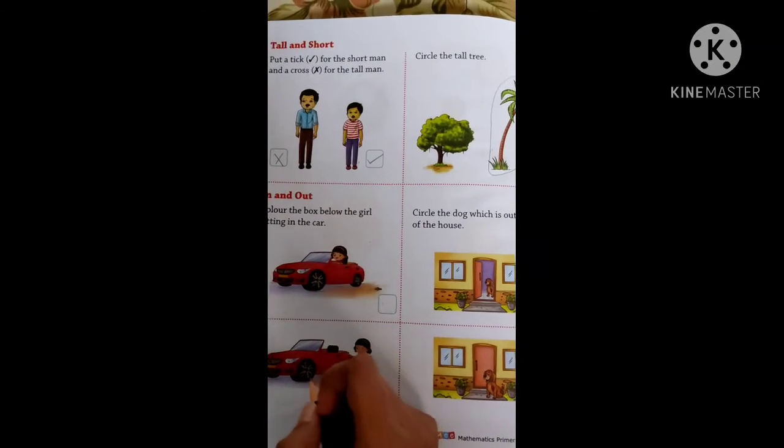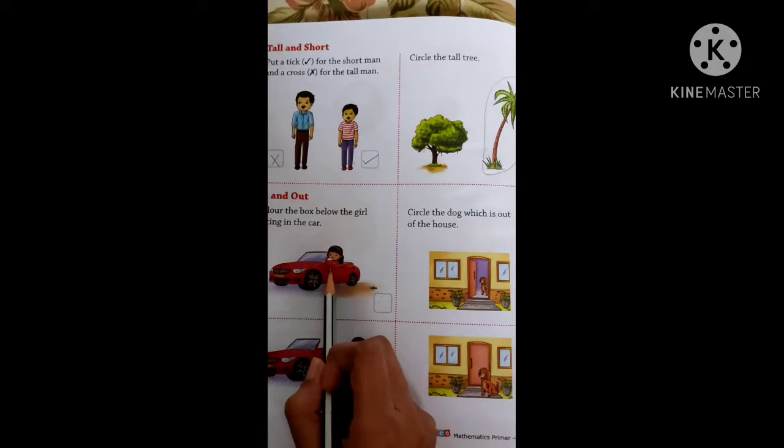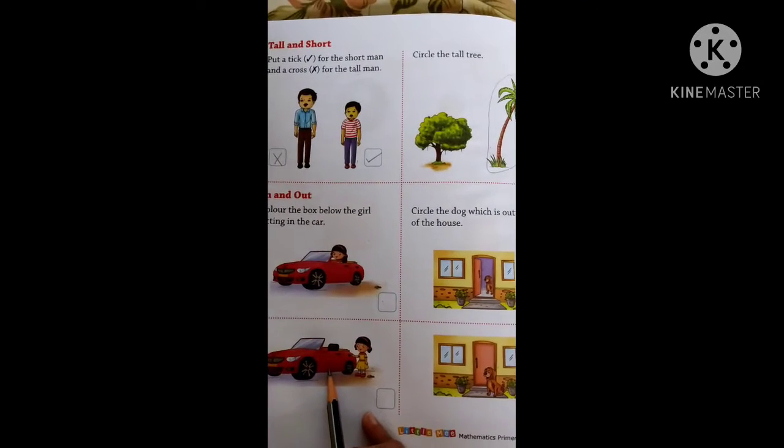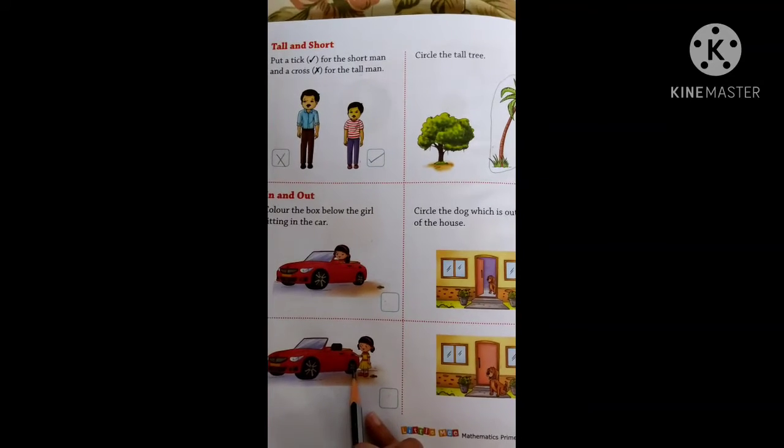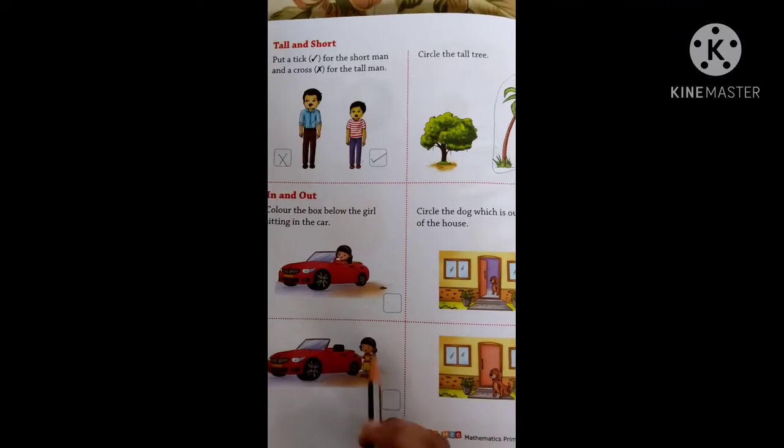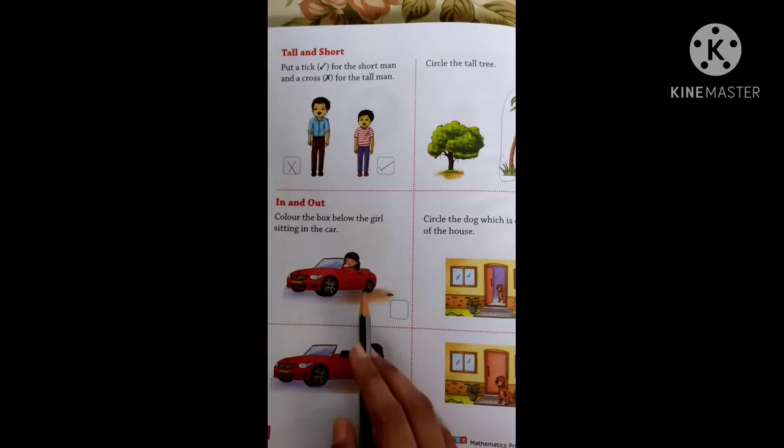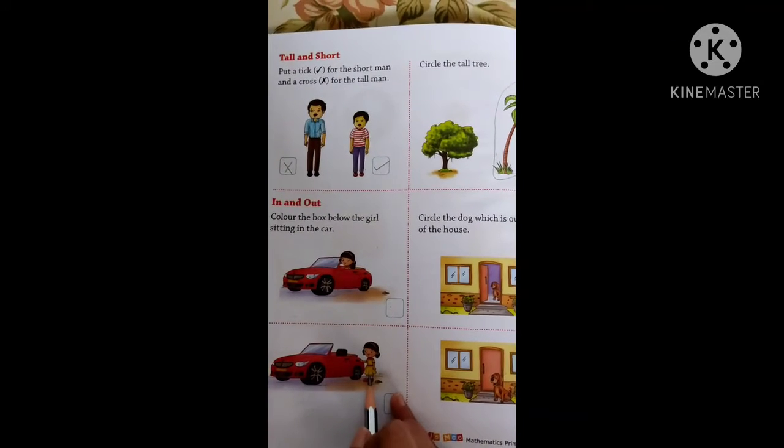You can see two pictures are given to you. In one picture, the girl is sitting in the car. And in the other picture, the girl is standing outside the car. So it shows she is in the car, she is out the car. This is in and this is out.